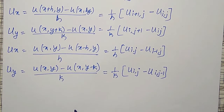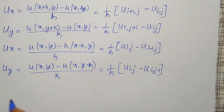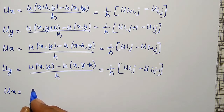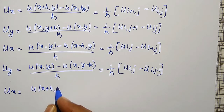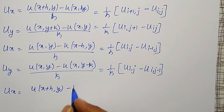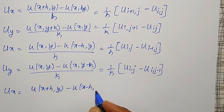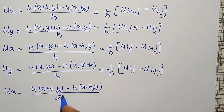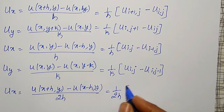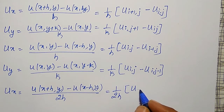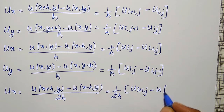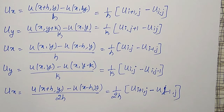These are the first-order differences. Using the central difference definition, u_x can be written as u of x plus h comma y minus u of x minus h comma y, whole divided by 2h. In short notation, that is 1/(2h) times u_{i+1, j} minus u_{i-1, j}. That is central difference.